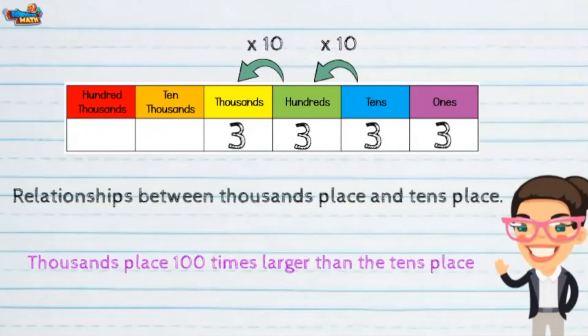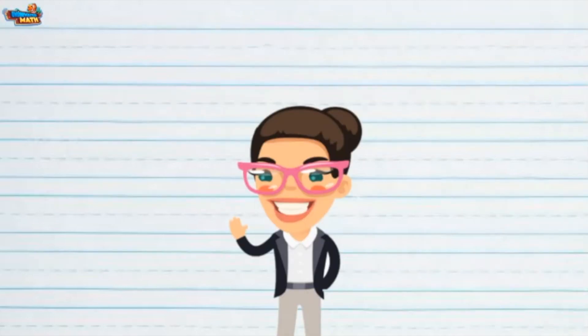The relationships between the place value systems are based on multiples of 10. That does it for us today with this skill builder on place value relationships.